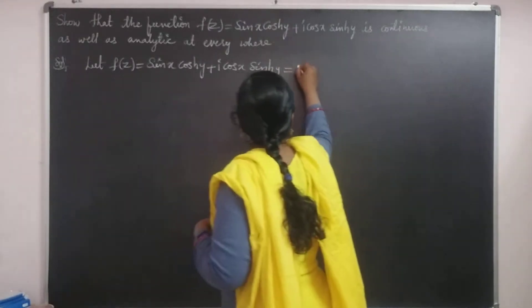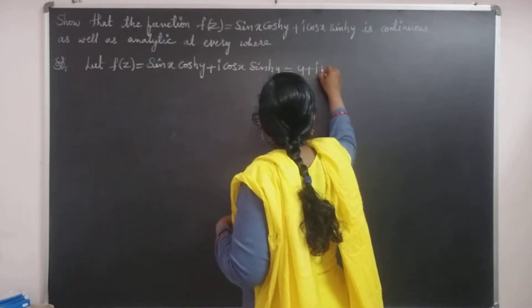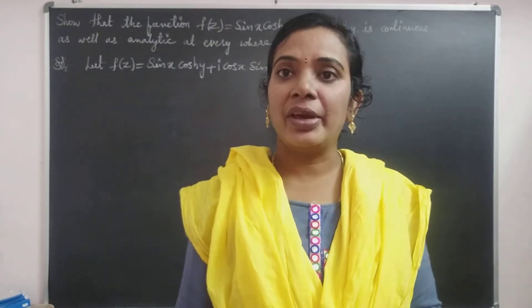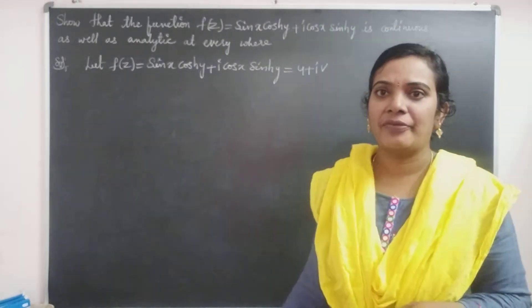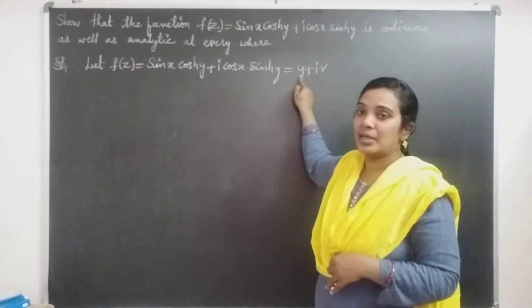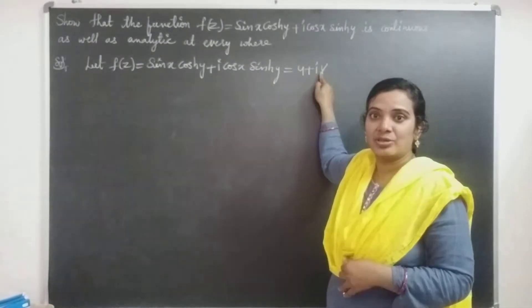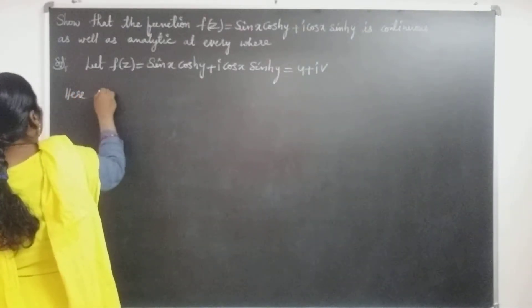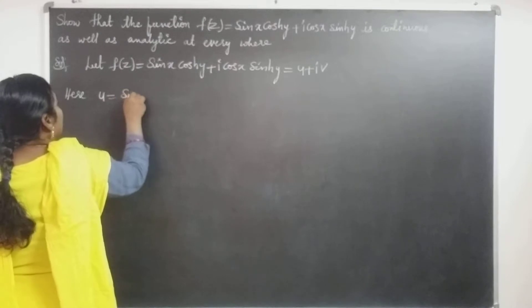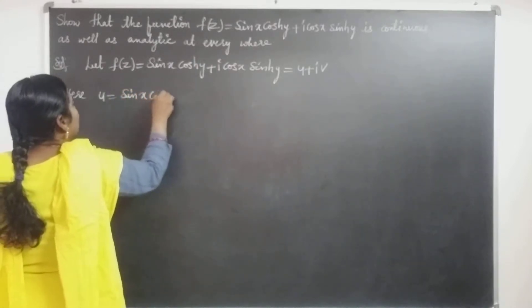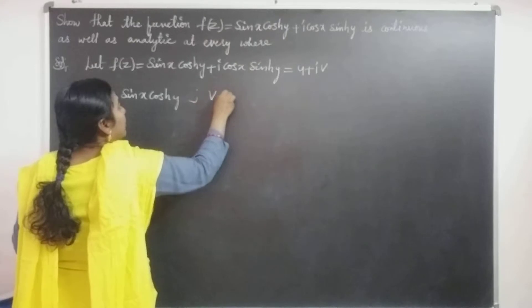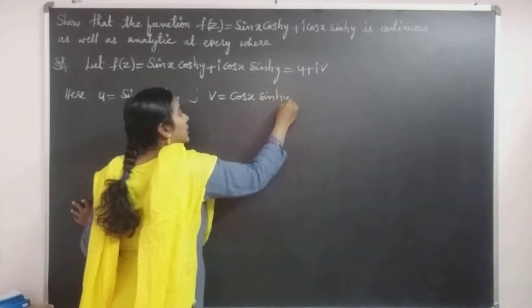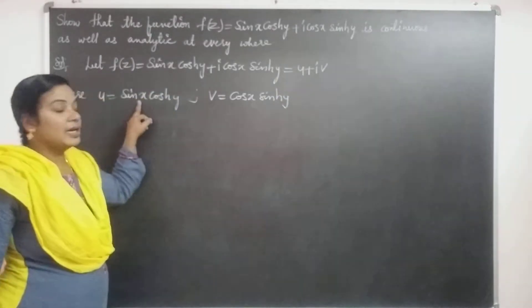It is expressed in the form of u + iv. Here u is the real part of f(z) and v is the imaginary part of f(z). Both u and v are functions of x and y. Here u = sin(x)cosh(y) and v = cos(x)sinh(y).